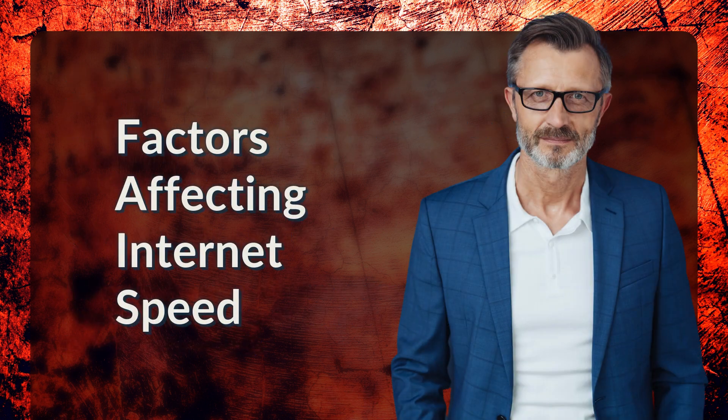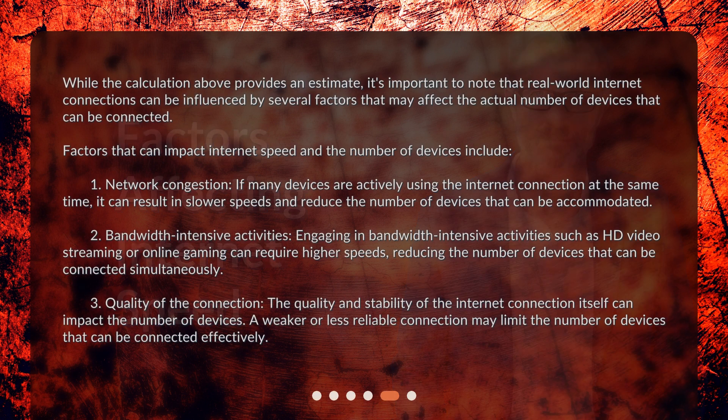Factors affecting internet speed. While the calculation above provides an estimate, it's important to note that real-world internet connections can be influenced by several factors that may affect the actual number of devices that can be connected. Factors that can impact internet speed and the number of devices include: 1. Network congestion — if many devices are actively using the internet connection at the same time, it can result in slower speeds and reduce the number of devices that can be accommodated.